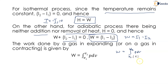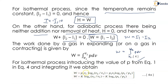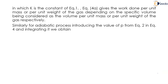For the isothermal process, introducing the value of P from Equation 1 into Equation 4 and integrating, we obtain W = P₁V₁ · ln(V₂/V₁) = P₁V₁ · ln(P₁/P₂). Also, W = K · ln(V₂/V₁) = K · ln(P₁/P₂), where K is the constant from Equation 1. This is Equation 4a, which gives the work done per unit mass or per unit weight of the gas depending on whether specific volume is considered per unit mass or per unit weight.